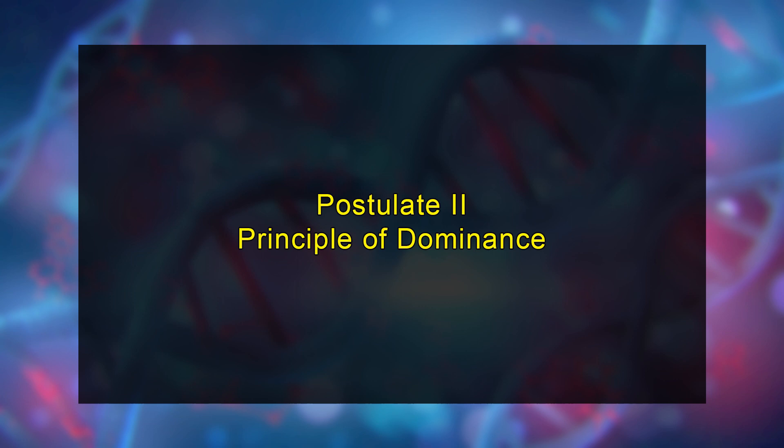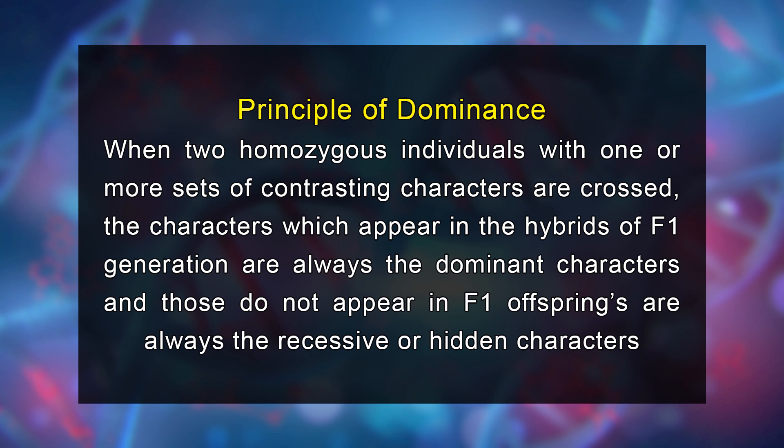Let's now discuss the second postulate, or principle of dominance. The principle of dominance suggests that when two homozygous individuals with one or more sets of contrasting characters are crossed, the characters which appear in the hybrid F1 generation are always the dominant characters, and those that do not appear in F1 offspring are always the recessive or hidden characters.